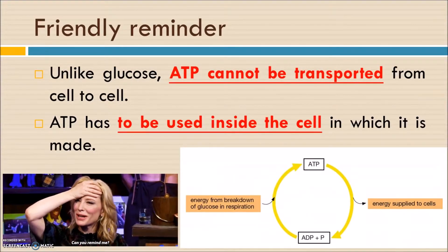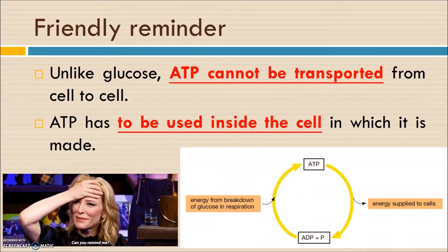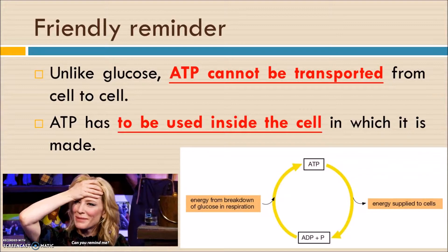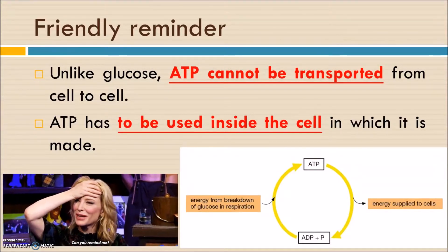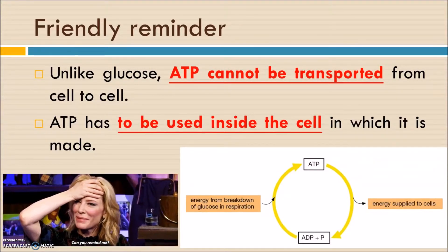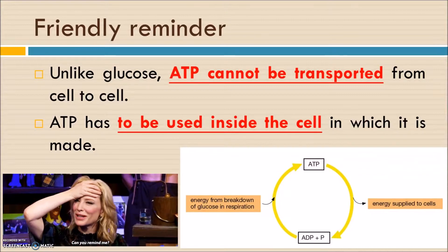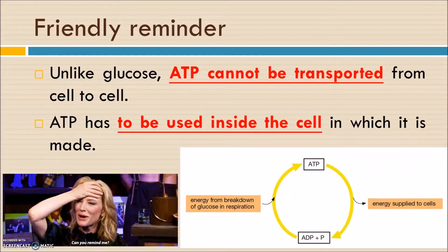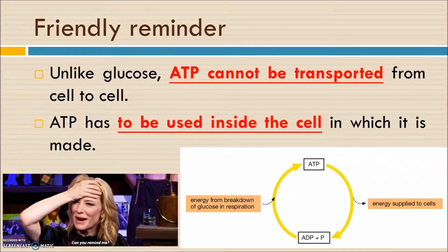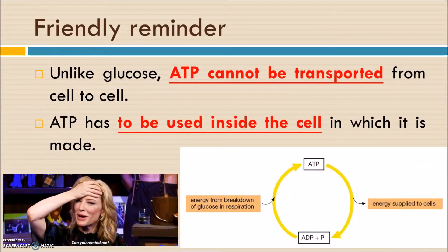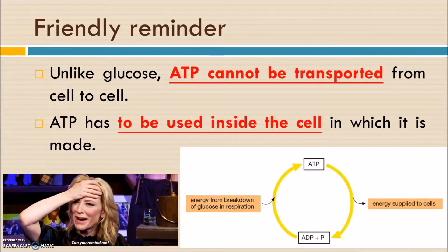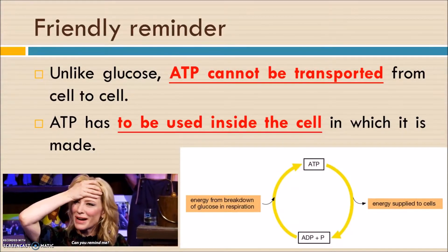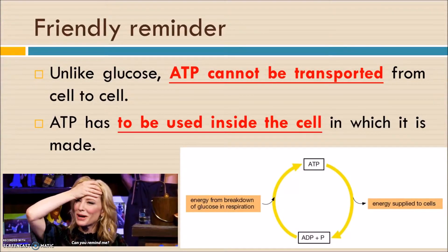One reminder about the products of respiration: ATP is the chemical energy used in our body. Food can be transported in blood for cells to uptake and carry out respiration. However, ATP cannot be transported in blood normally. So if the liver cells need ATP, they must produce it themselves rather than receiving it from muscle cells.